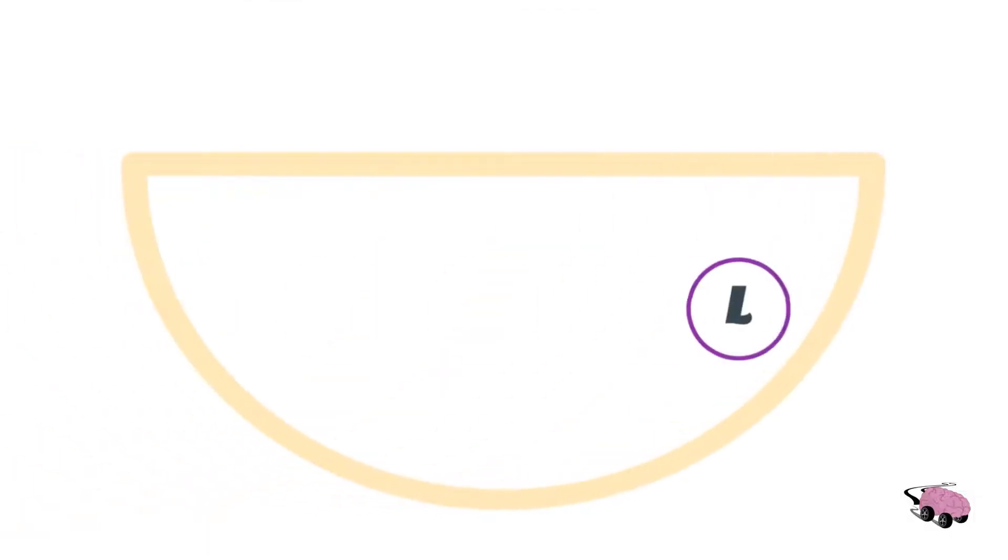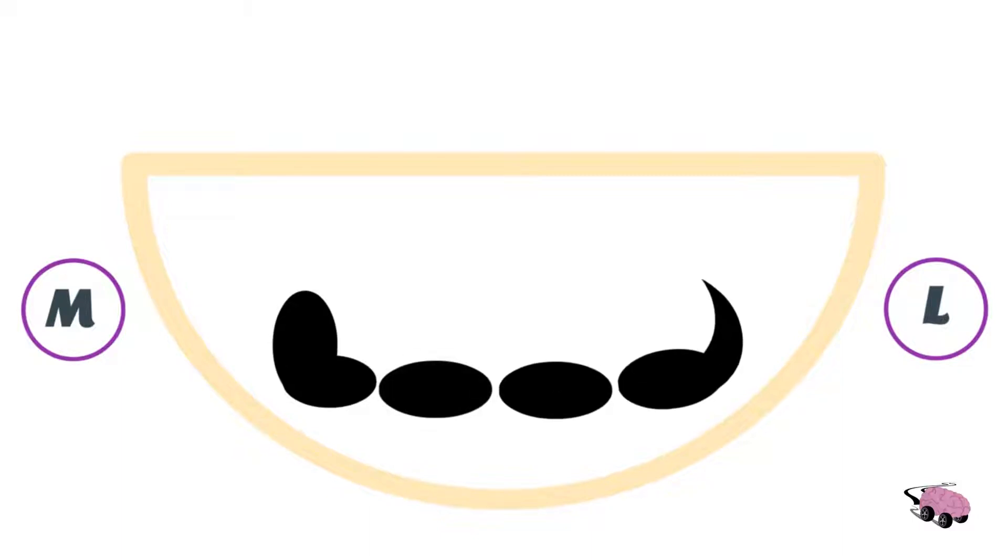We'll focus on the structures forming the carpal tunnel first, which is the eight carpal bones and the flexor retinaculum. However, in this drawing, we'll only draw the four carpal bones.